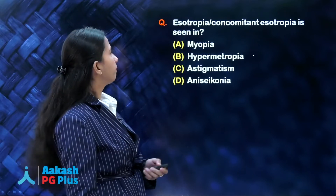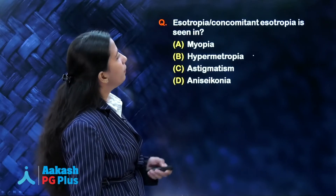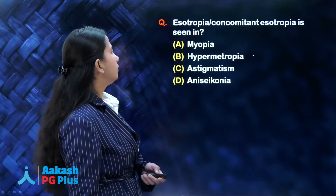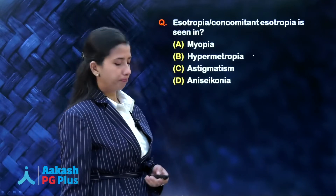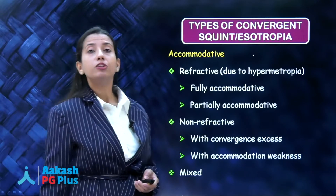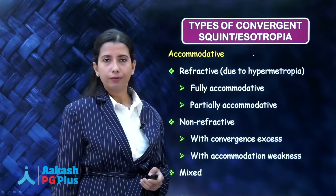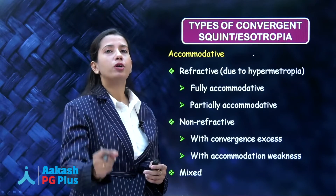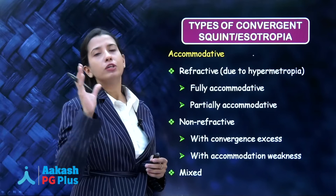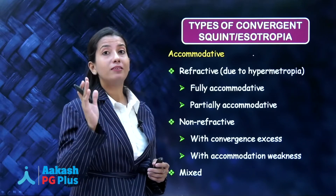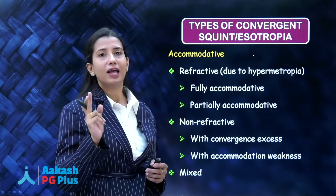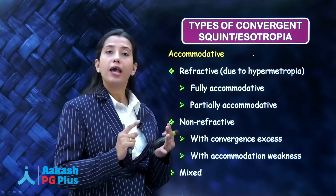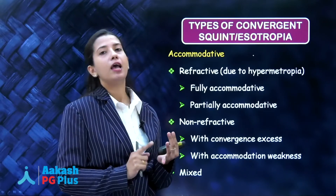Next question: esotropia or concomitant esotropia is seen in myopia, hypermetropia, astigmatism, or anisoconia? Esotropia means inward deviation or inward squinting of the eye. It can have many causes, and one of the most important causes is accommodative esotropia. Accommodation is a triad of accommodation, convergence, and miosis.